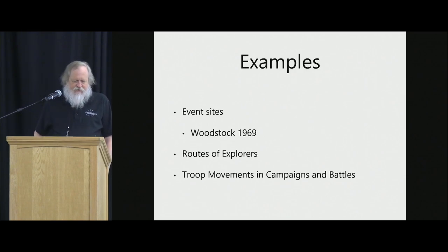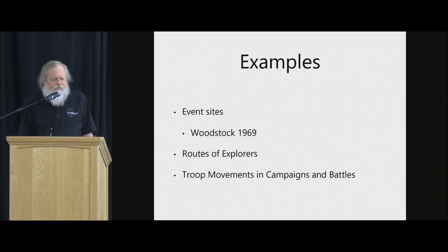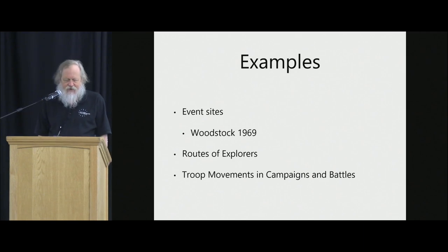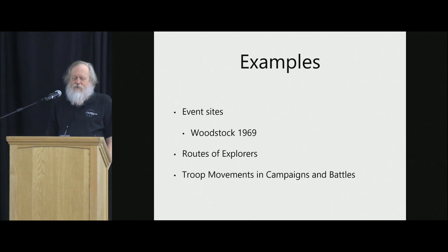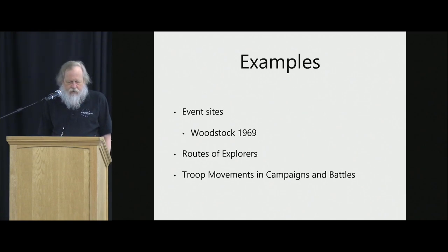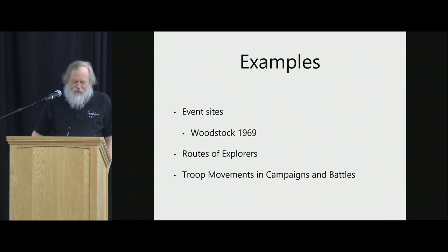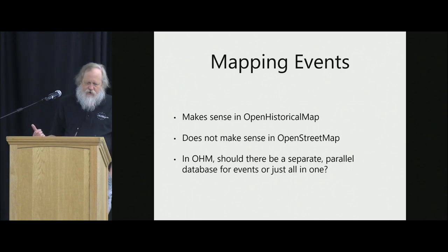So what kinds of events are we talking about here? It could be event sites like Woodstock in 1969 — that's an event, it was on a site, there's geodata, and it is over. Routes of explorers, Magellan crossing the Pacific, troop movements, battles, and campaigns are all things that happened and are over. So they make sense in OHM; they make no sense in OpenStreetMap.